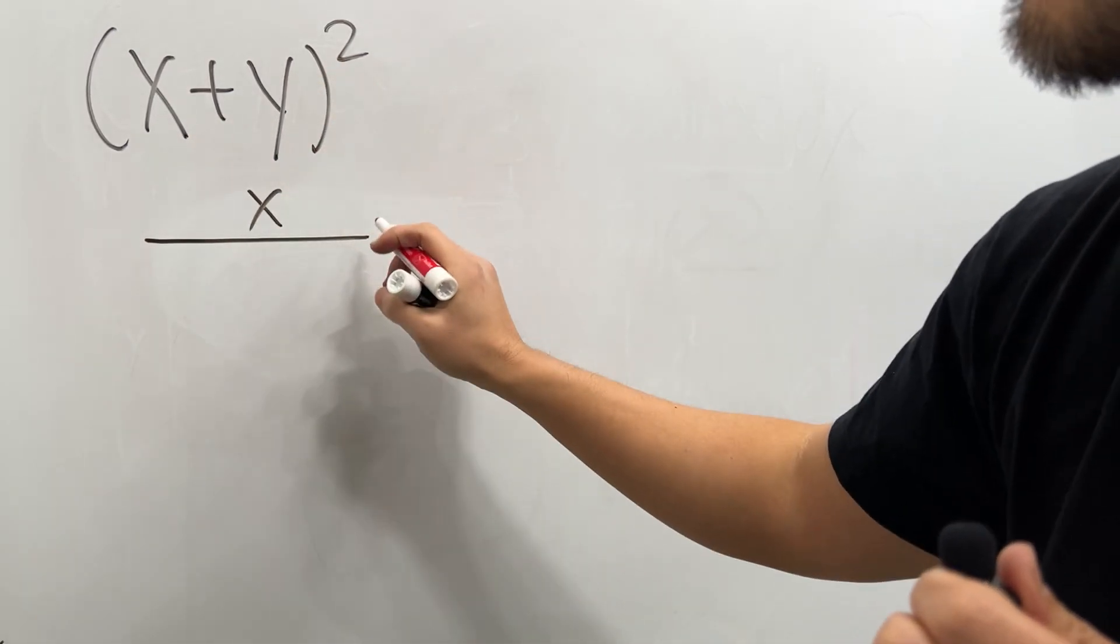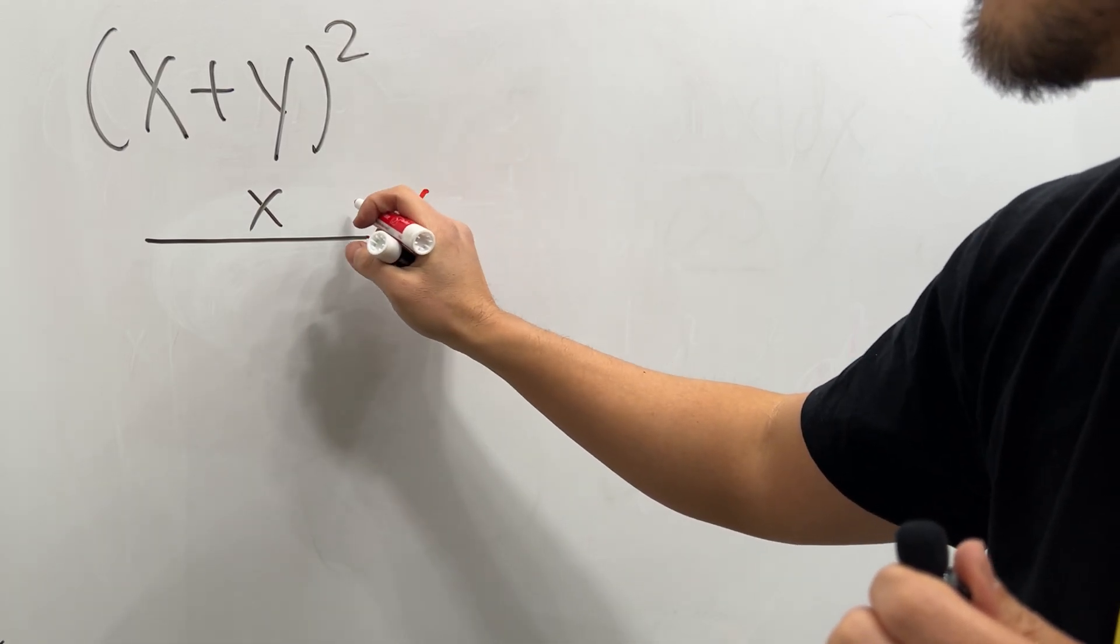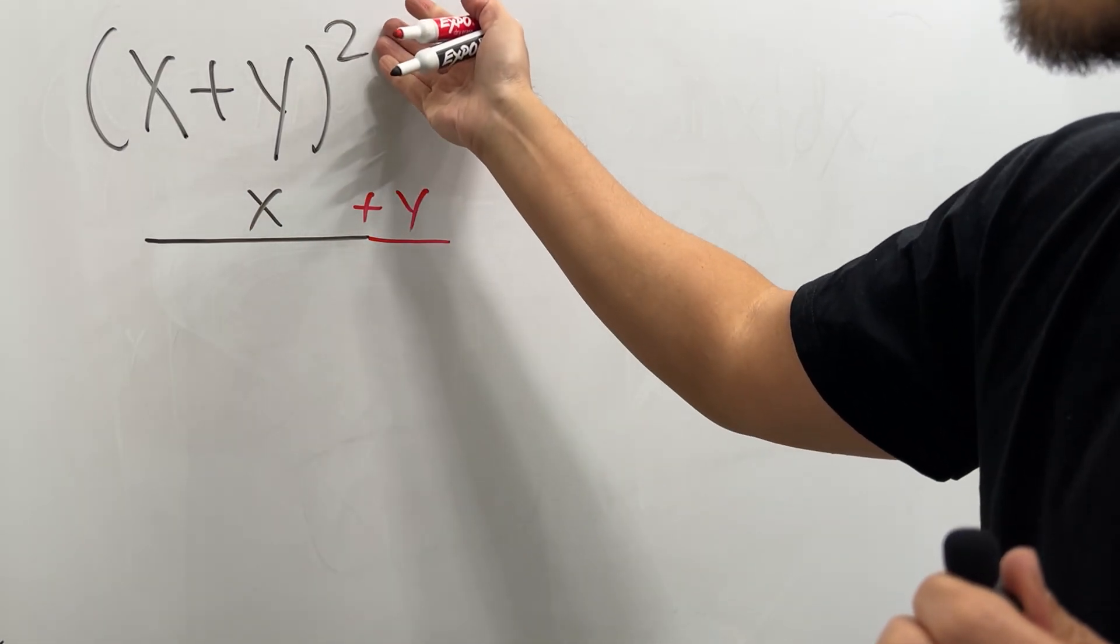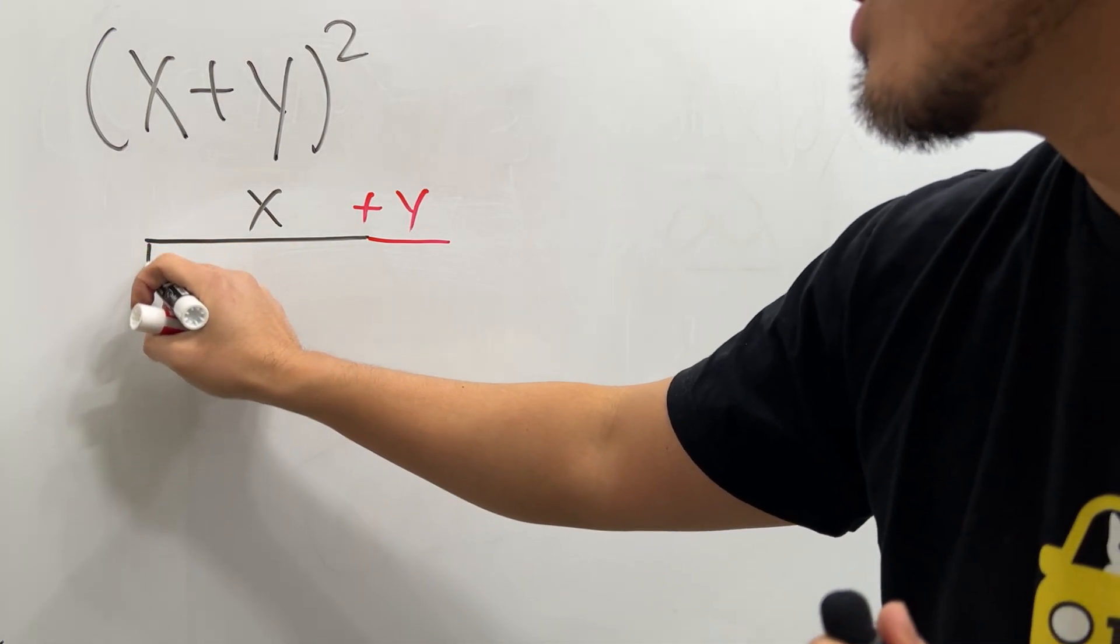And then for the y, that is this little bit, and of course right here is x plus y. The square means that you really draw a square, so let's go ahead and make a square right here.